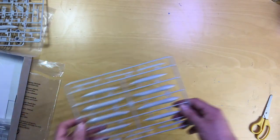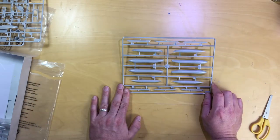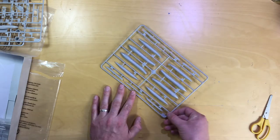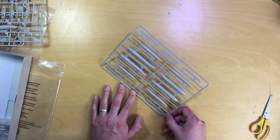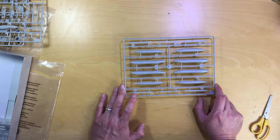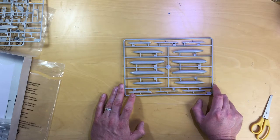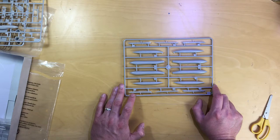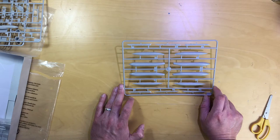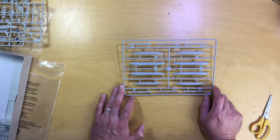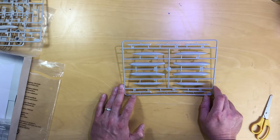The fuel tank sprue - it's quite nice to have the two types, both the larger fuel tanks and the smaller ones. You'll have to check your references as to which one's being carried. I think if you're doing an operational bird, they tend to carry the large fuel tanks, maybe even three - one under each wing and one on the center pylon.